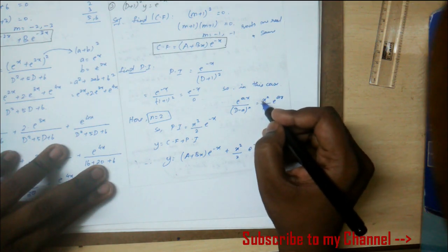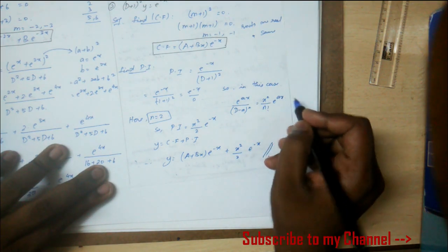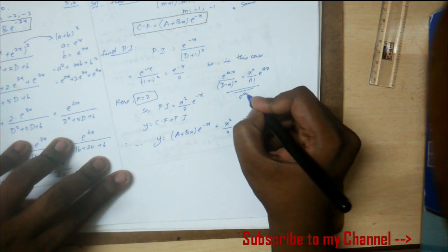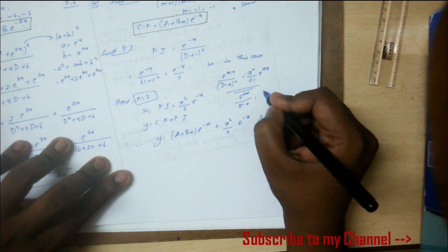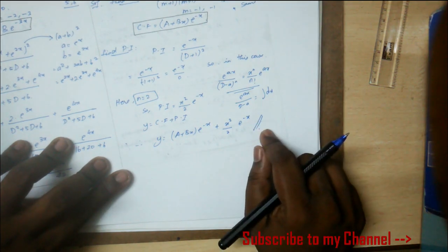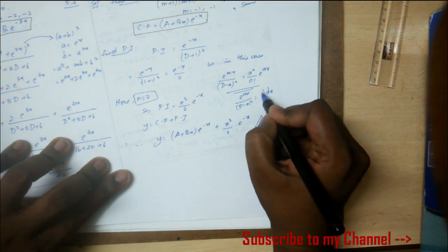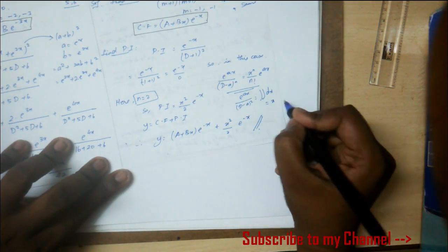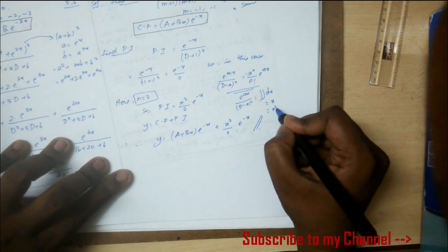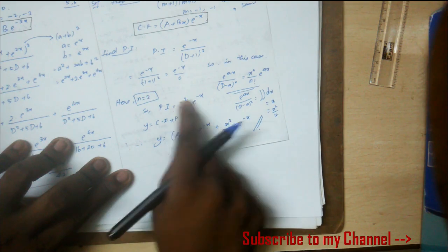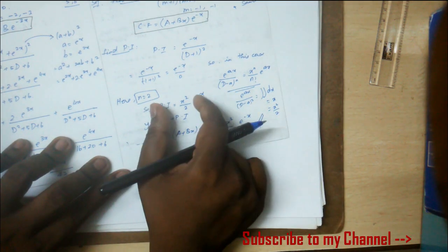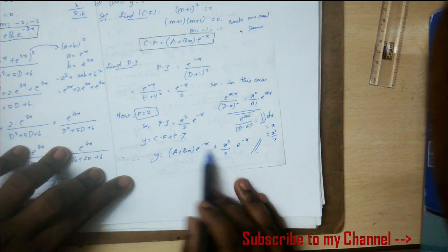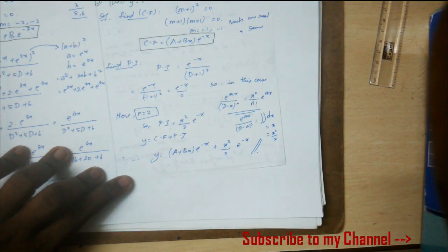The formula is: e^(ax)/(D - a)^n = (x^n/n!)e^(ax). For (D + 1)², you integrate twice. So the final answer is (A + Bx)e^(-x) plus the PI. This is the complete solution.